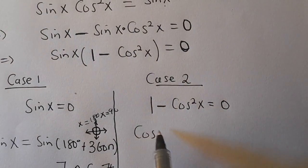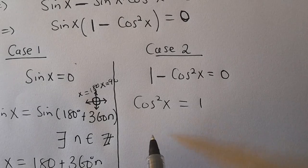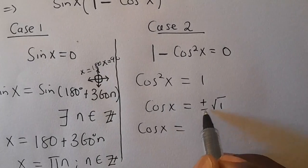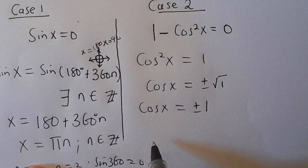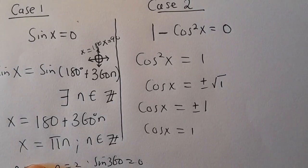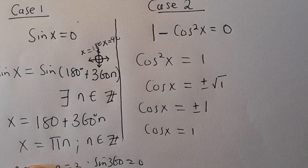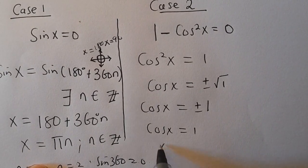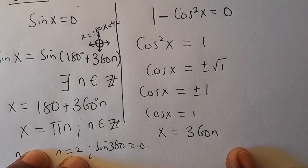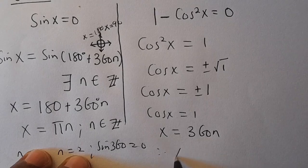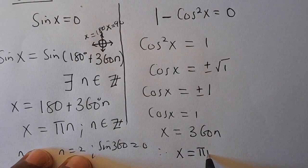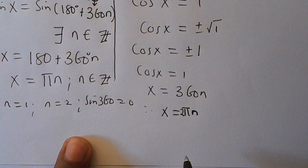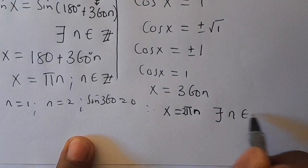Now coming down to case two: taking 1 minus cos²(x) = 0 to the other side, we have cos²(x) equals 1. By taking the square root, we have cos(x) equals positive or negative 1. Now let us consider when cos(x) equals 1: this implies x equals 360°·n. So we can express this as x equals 2π·n, such that n is a member of the positive integers.